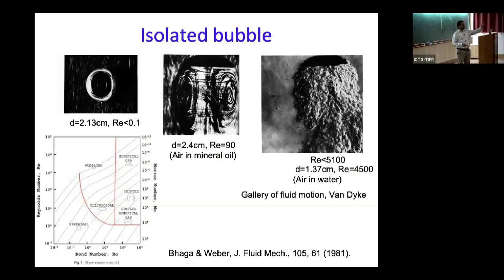One estimate of the buoyancy timescale is the bubble diameter divided by the rise velocity. It depends on the Galilei number, but for a single isolated bubble—it's not clear when looking at a suspension whether that's the appropriate estimate, since things interact with each other. But let's see what happens, starting with an isolated bubble.